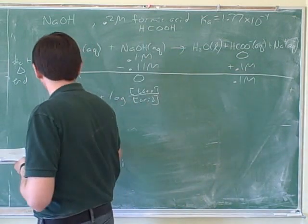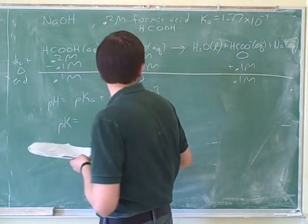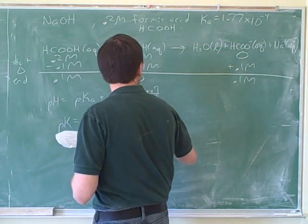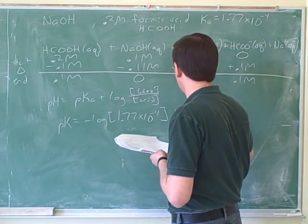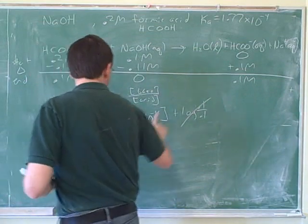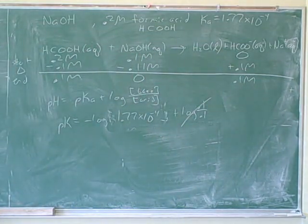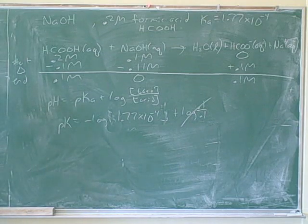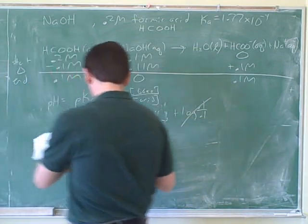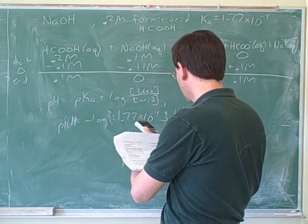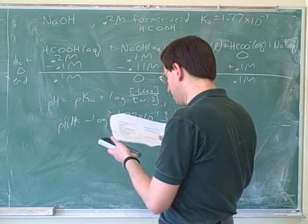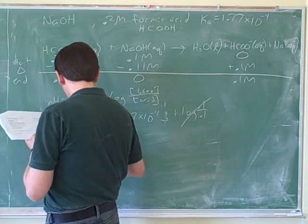How do we know the Ka though? That was given at the top of the page. So negative log of Ka? Right. 3.75. That's the right answer? Yes.